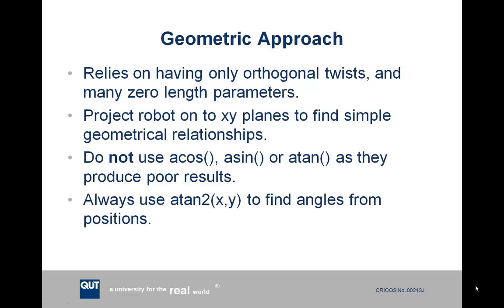This geometric approach relies on only having orthogonal twists and also hopefully many zero length parameters to make the math a bit easier. The general approach is we project the parts of the robot we're analyzing onto planes in order to find simple geometrical relationships in terms of angles. As we're using angles and inverse trigonometric functions, the general idea is not to use acos, asin, or atan because they are not great in a programming sense. The ideal one is atan2, which is a function which you can find in programming languages which takes two arguments x and y to work out an angle.